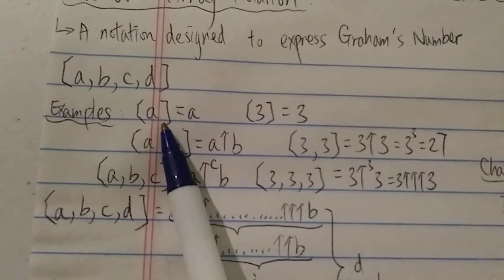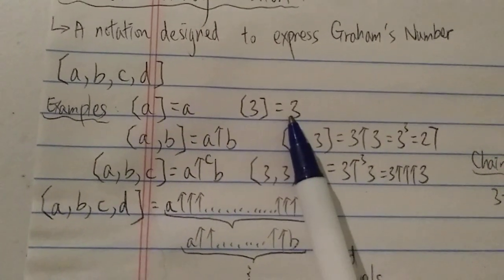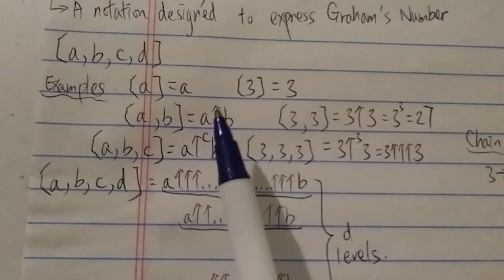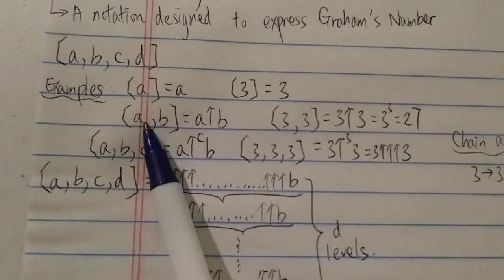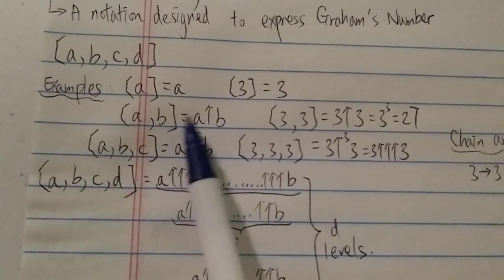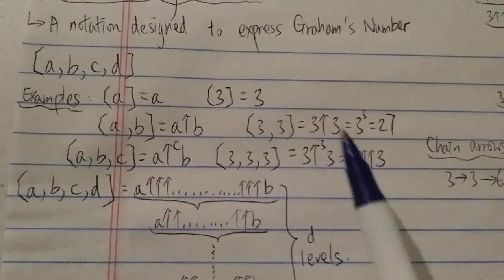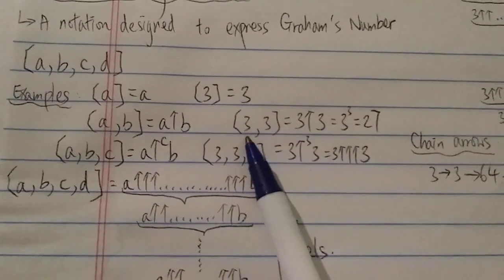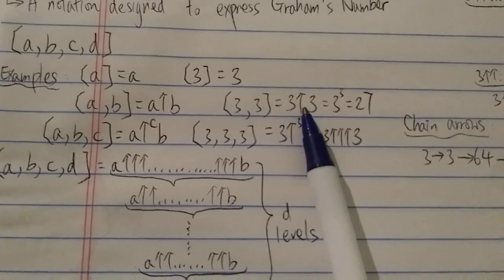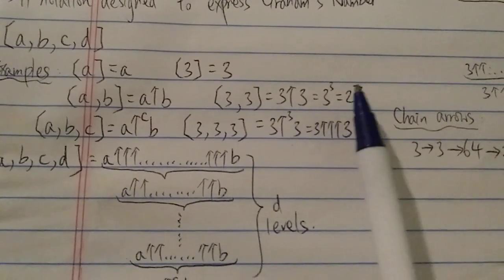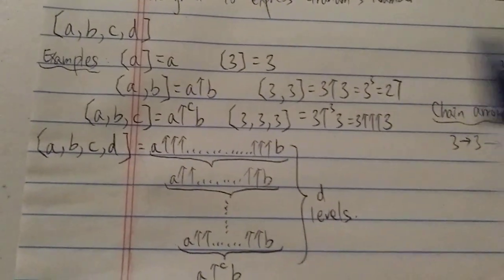A in a bracket just means A, so three in a bracket means three — very straightforward. If you put two terms, bracket A and B, it means A arrow B, which means A to the power of B. So for example, [3,3] means three up-arrow three, which equals 27.